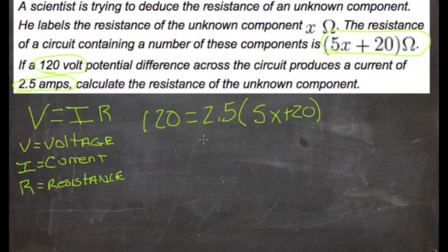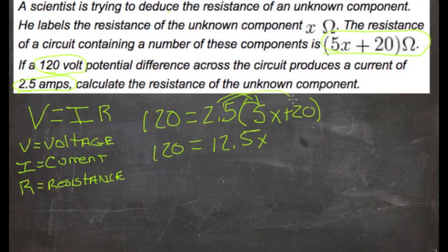So then we just solve this equation for x. We'll distribute the 2.5 here. We'll have 120 equals 2.5 times 5, that's 12 and a half x, and then 2.5 times 20 is plus 50.